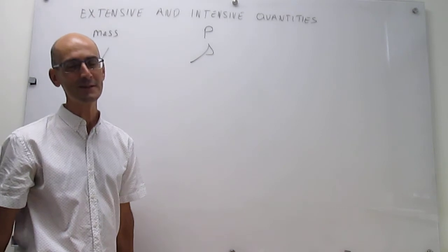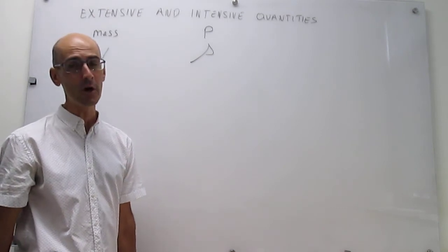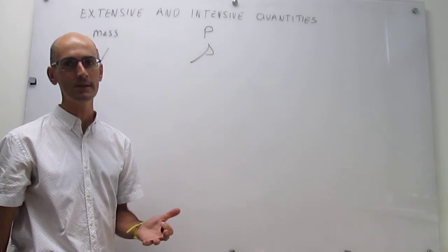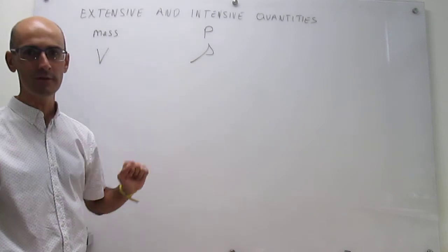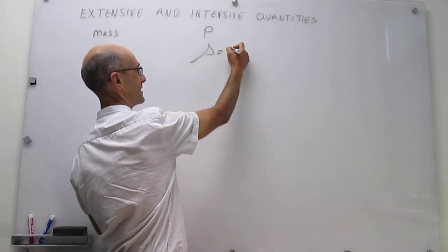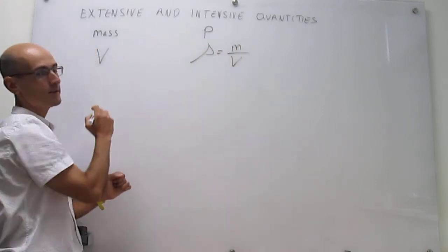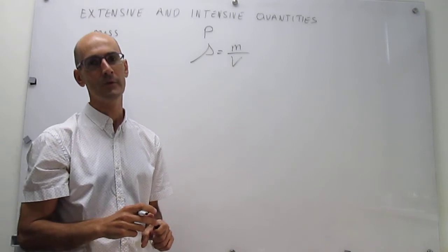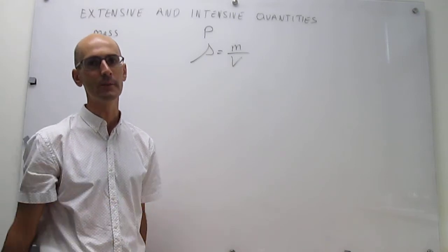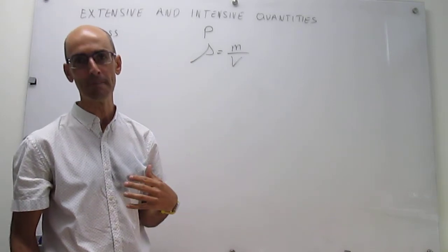Now, something interesting here is that when you take the ratio of two extensive quantities, you get an intensive quantity. If you go to the definition of density, notice that density is mass over volume. Notice that mass and volume are both extensive quantities, but the ratio happens to be intensive, and that is pretty common as well. The same thing happens for pressure - it's force over area.